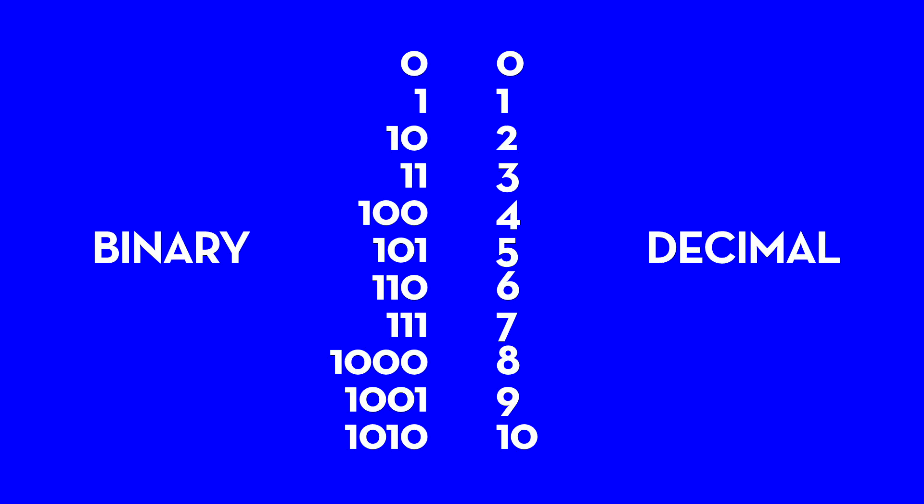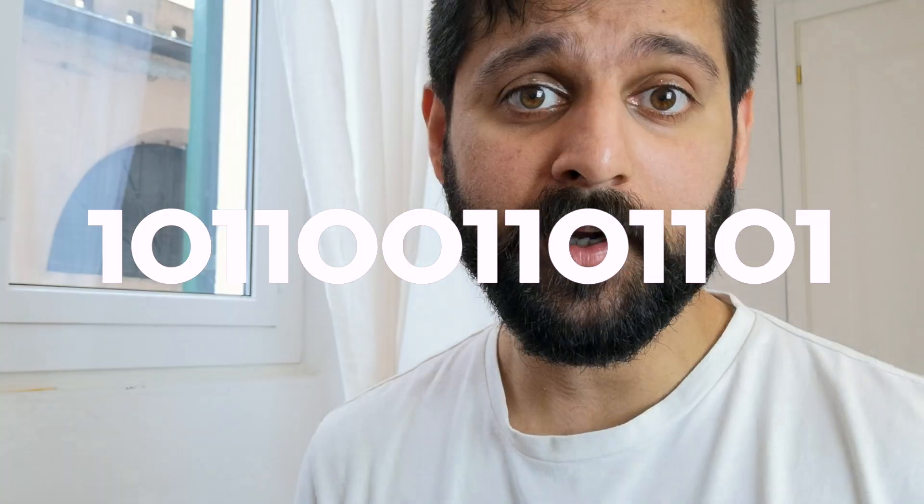Hopefully this is starting to make some sense now. If we wanted to make the number five, we can just increase the zero on the right-hand side to one, which gives us one zero one. Now, hopefully you know how to start with the number zero and keep increasing it. But let's say somebody very quickly shows you a number in binary — a long number — and you want to figure out what that number is. You could just sit there and keep increasing numbers from zero until you match that number, but of course that's going to be very long-winded. There is a shortcut that we can take.